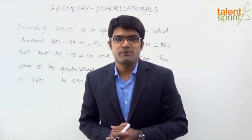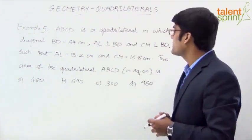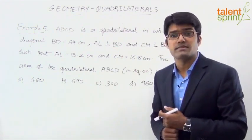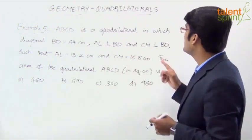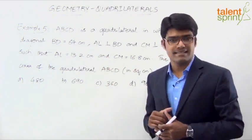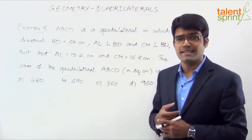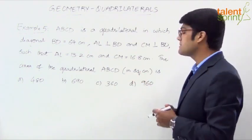Let us now look at example 5. The question here is ABCD is a quadrilateral in which diagonal BD is 64 cm. AL is perpendicular to BD and CM is also perpendicular to BD such that AL is 13.2 cm and CM is 16.8 cm.